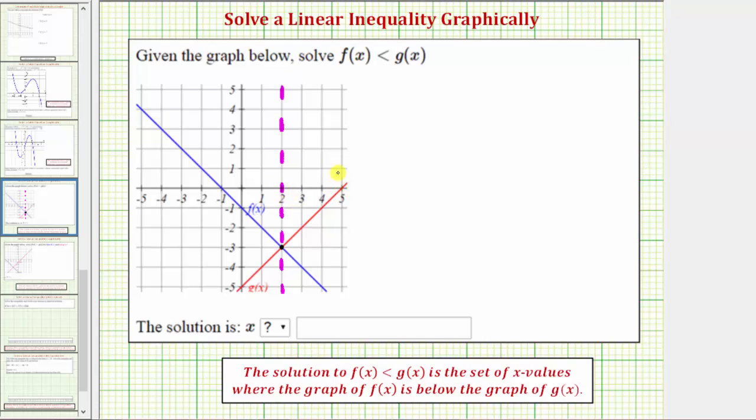Notice how to the right of positive two, the graph of f(x) is below the graph of g(x), which means the x values to the right of positive two are the solutions to the inequality.